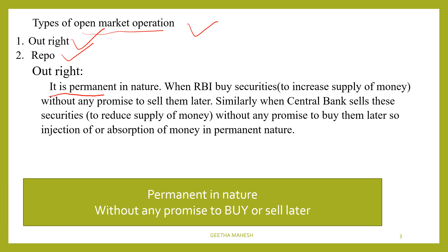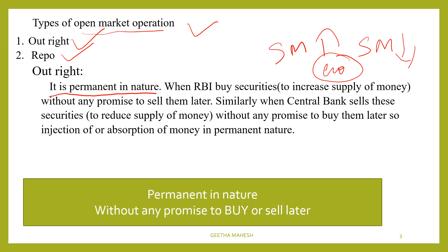Outright is permanent in nature. In terms of supply of money: when the central bank buys, the supply of money increases. When it sells securities, the supply of money decreases.